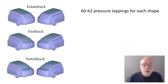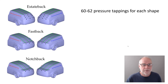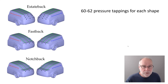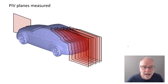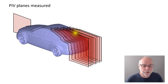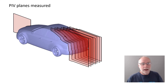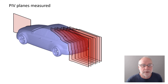How do they do the measurements? Depending on which geometry they were doing, they had 60 or 62 pressure tappings for each shape, measuring the pressures exerted by the airflow over those different models. For the PIV — measuring the speed of the air — at the front they just did one slice right at the stagnation point in the middle of the car. But at the back they did multiple slices, not only on the centre line but also offset toward and away from the viewer. It's really, really good data gathering.